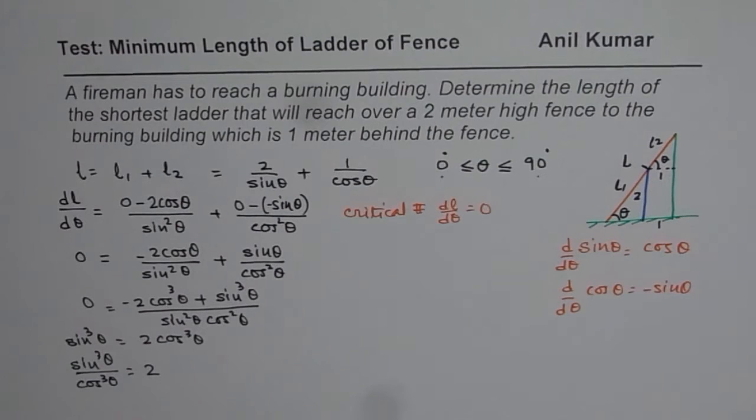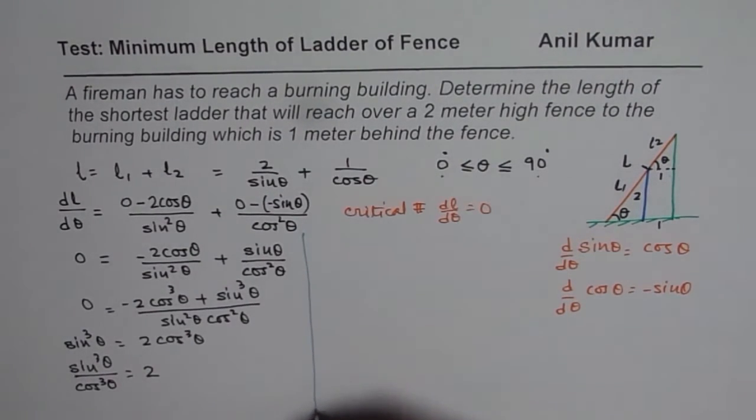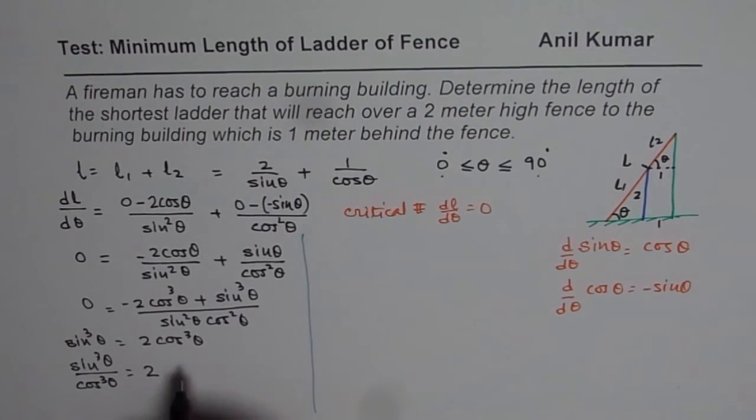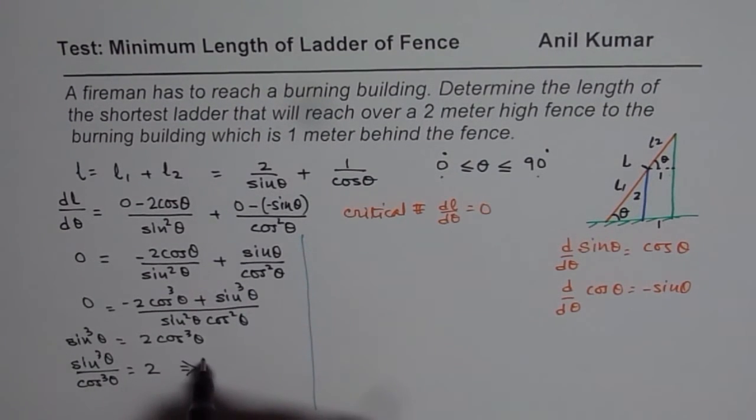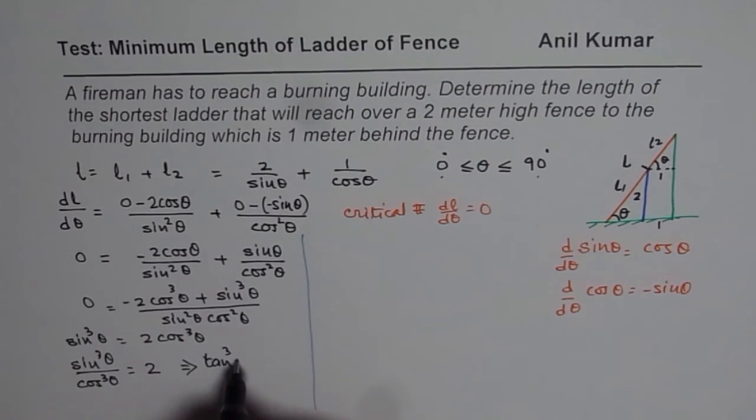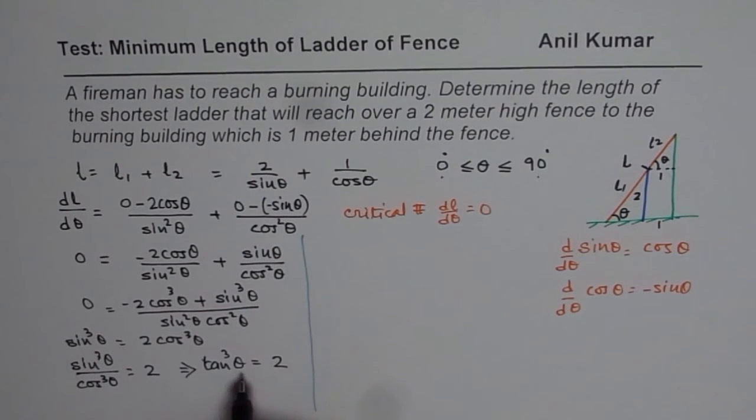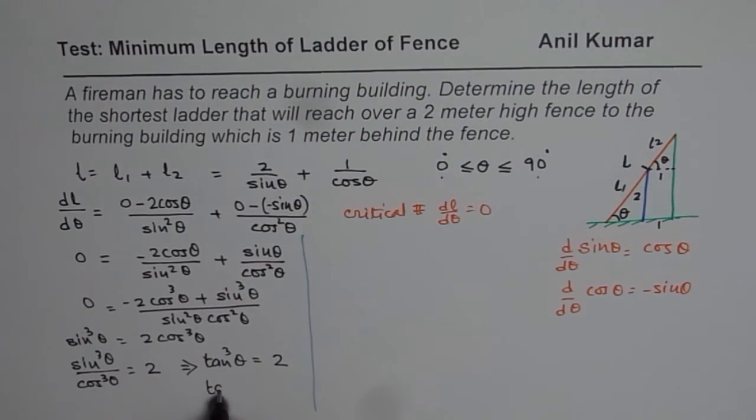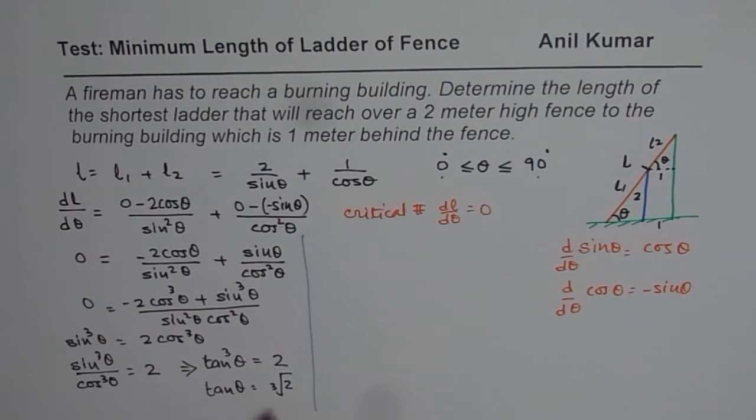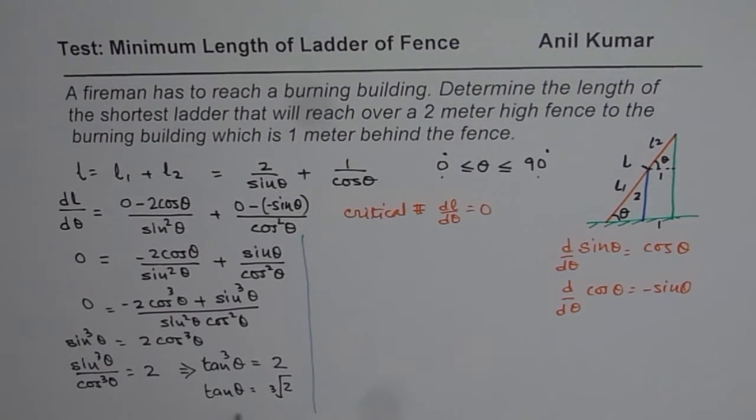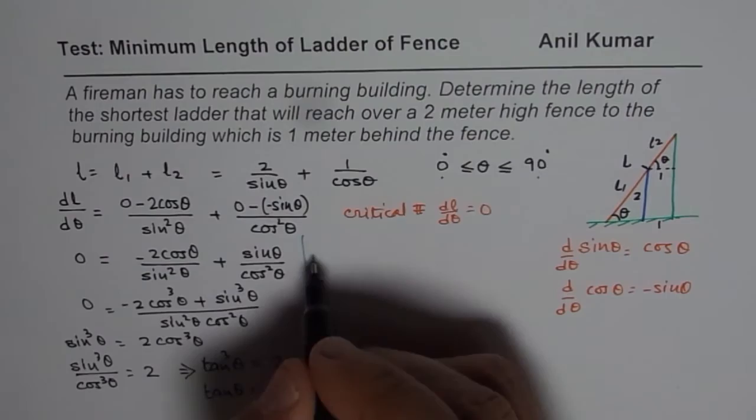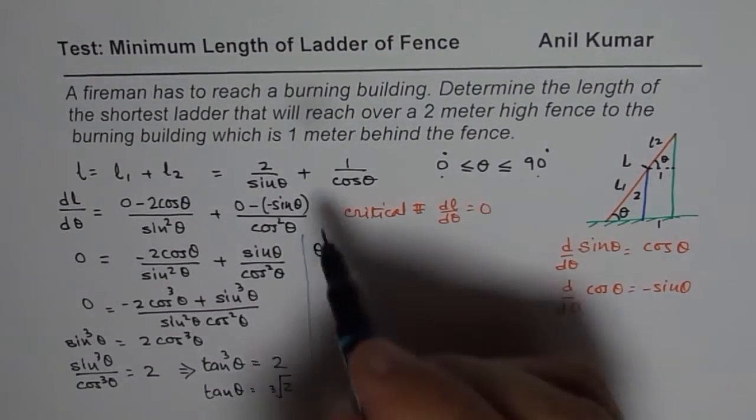So now we can write this as, we will do it on the right side. So this basically gives us tan cube theta equals to 2 or we can say angle theta equals cube root. So tan theta will be cube root of 2. So that is what we get.